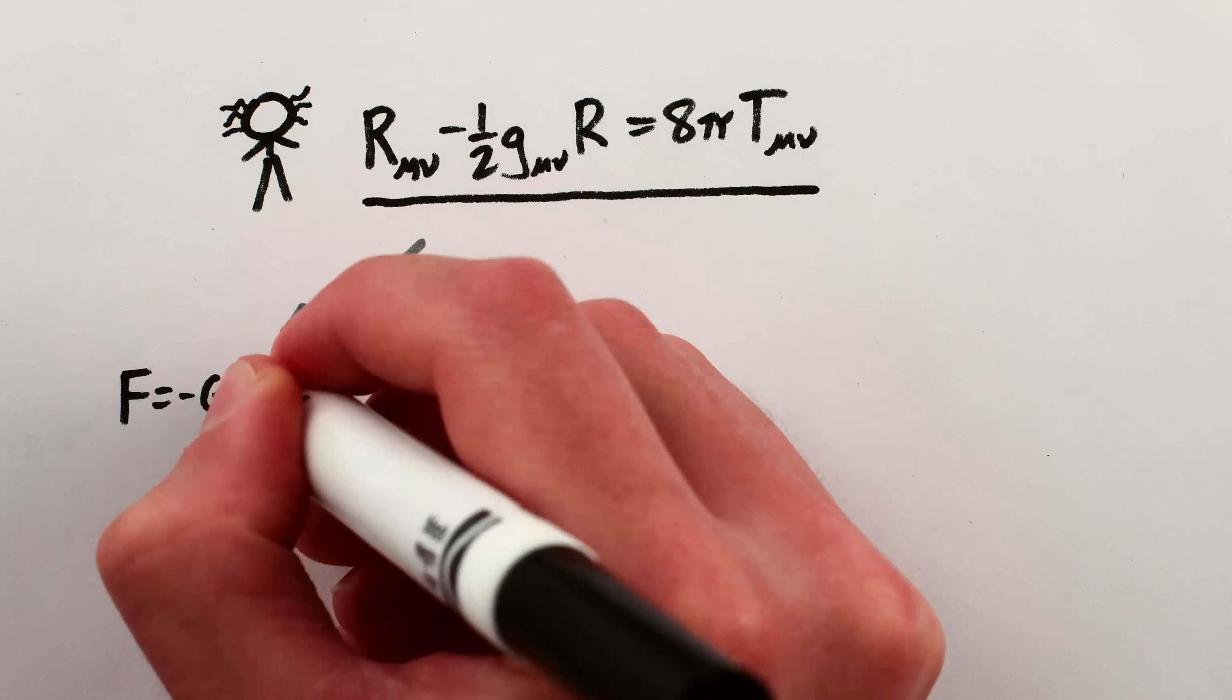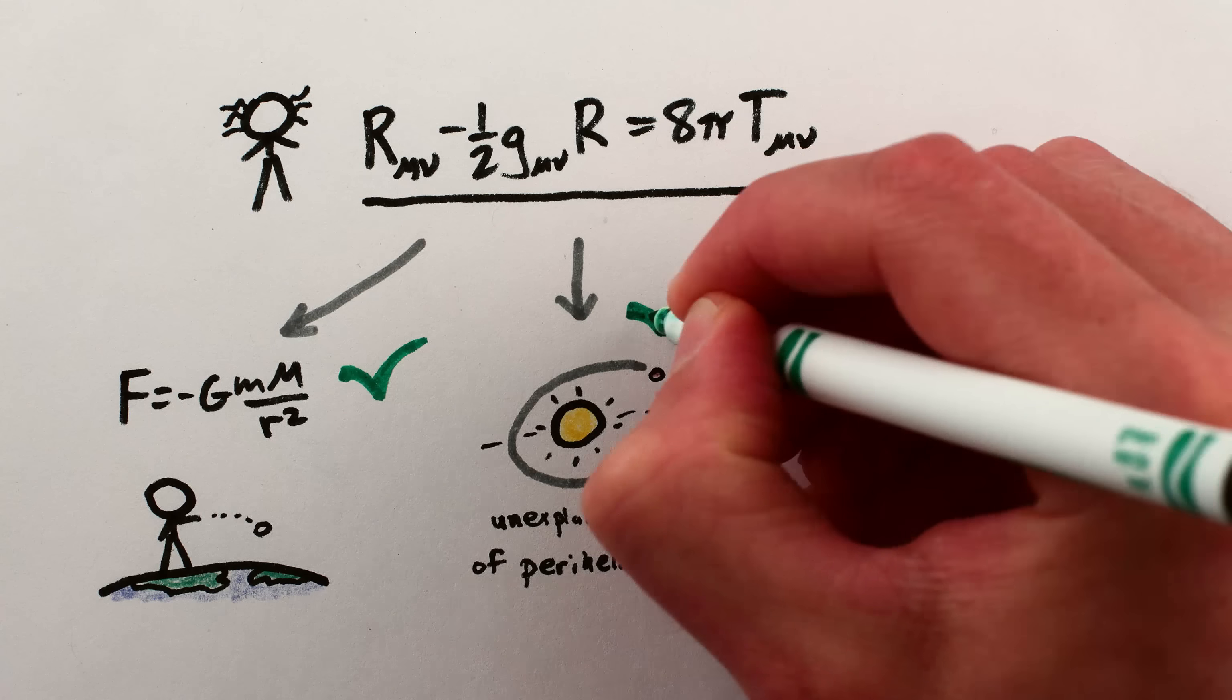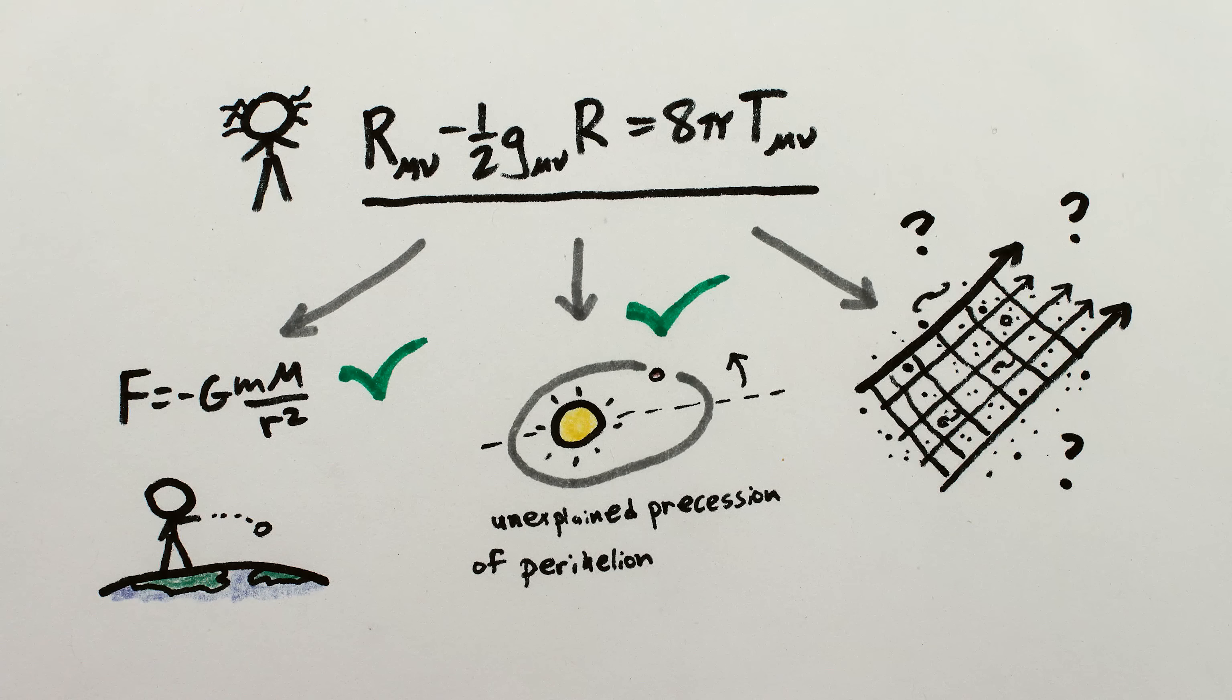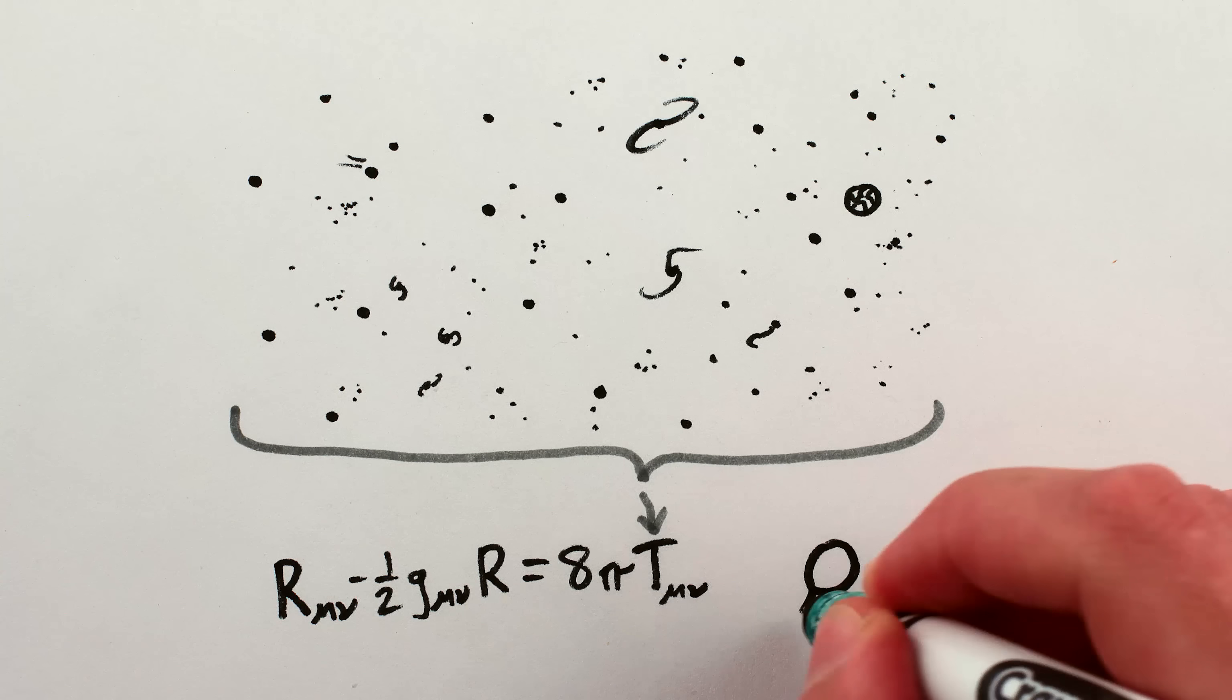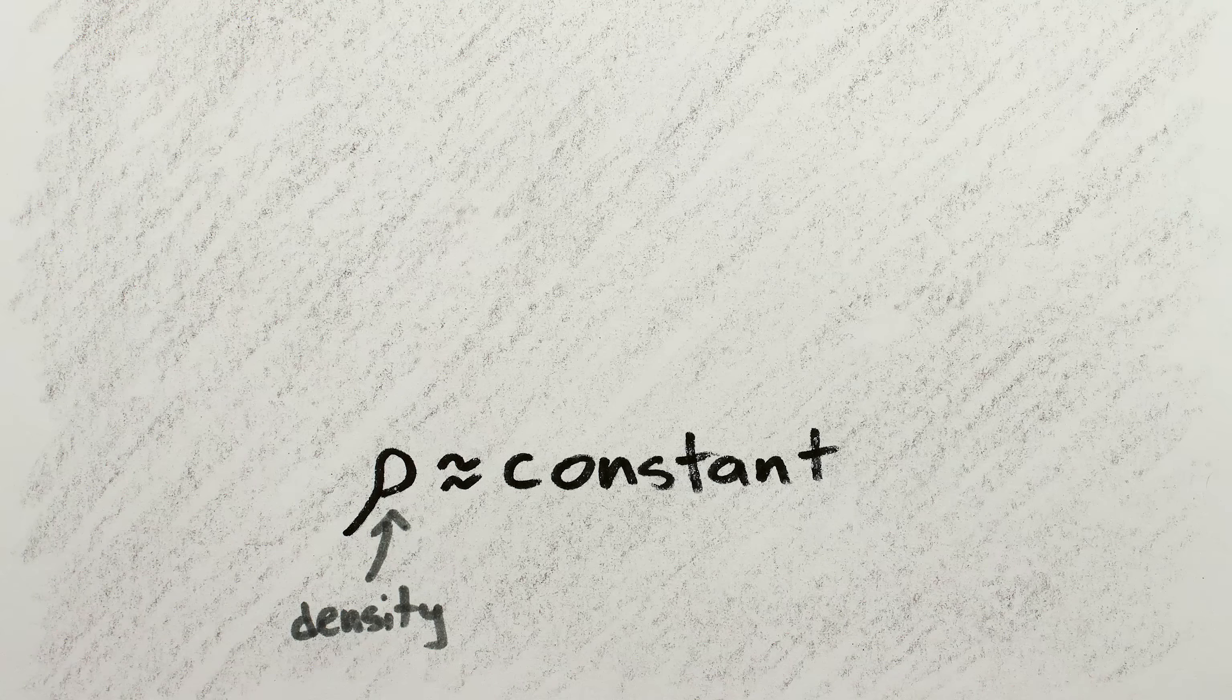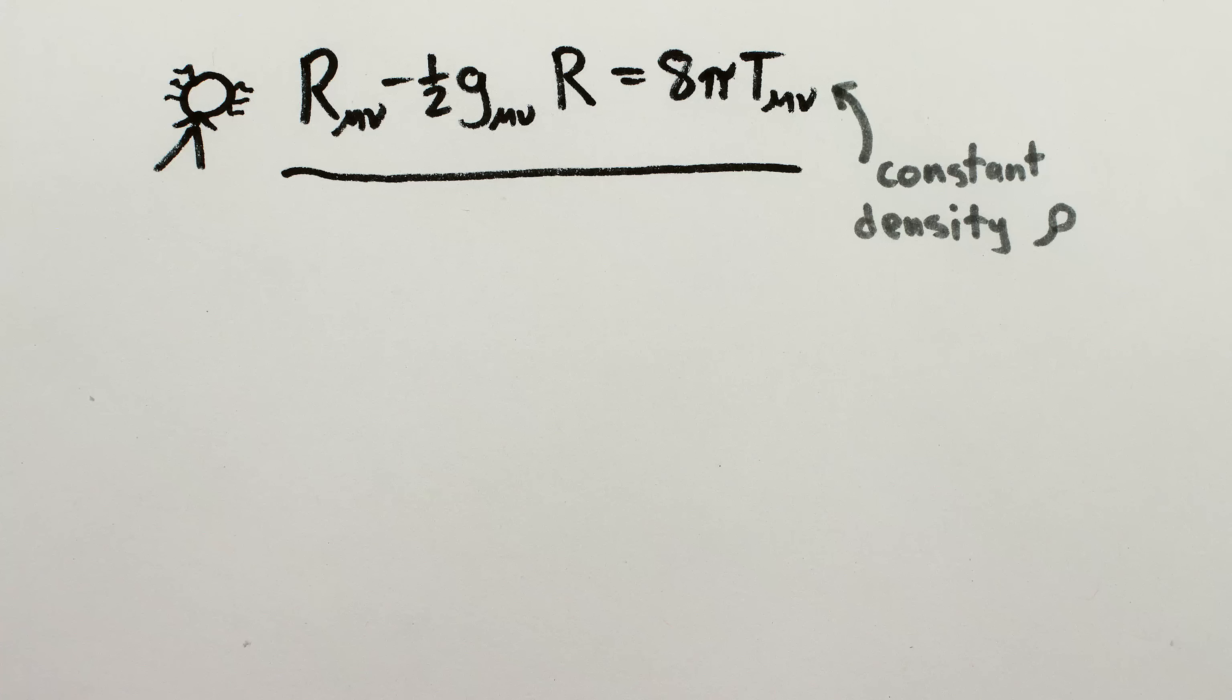After figuring out that these equations matched up with Newton's law of gravitation for weak gravitational fields, and after showing that the equations correctly predicted a previously unexplained anomaly in the orbit of Mercury, Einstein tried to figure out what the equations had to say about the universe as a whole. Of course, all the matter and energy in the universe is much too complicated to put into the equations and have any hope of solving them, but if you zoom out enough, you can approximate the universe as having a roughly constant density everywhere, and in every direction.